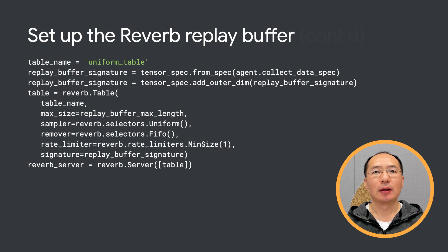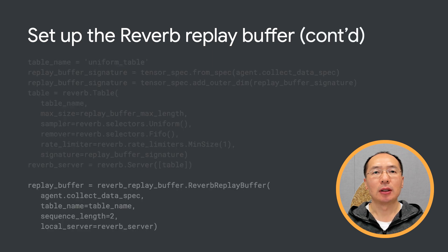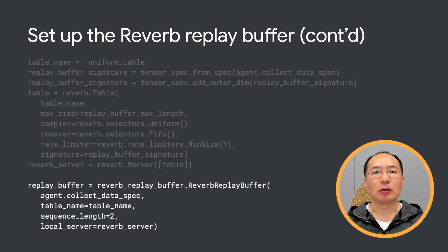Then we start a Reverb server. Next, we create the Reverb replay buffer using the Reverb server and the table. Note that we set sequence length to 2 since this is required by the DQN agent.